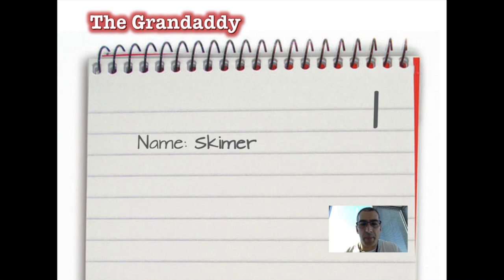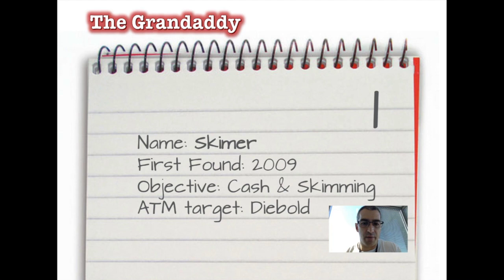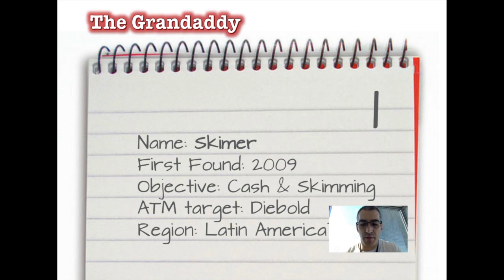The granddaddy of them all is called Skimer. It was first found in 2009 in Russia and then again in 2011 in Latin America. We don't really know if it's Russian technology adopted in South America or both simultaneously. It targets exclusively one specific brand of machine and is currently being seen in Latin America. After 2009 came 2011 as the second version, and from 2015 onward it's really been picking up speed through 2016 and 2017.